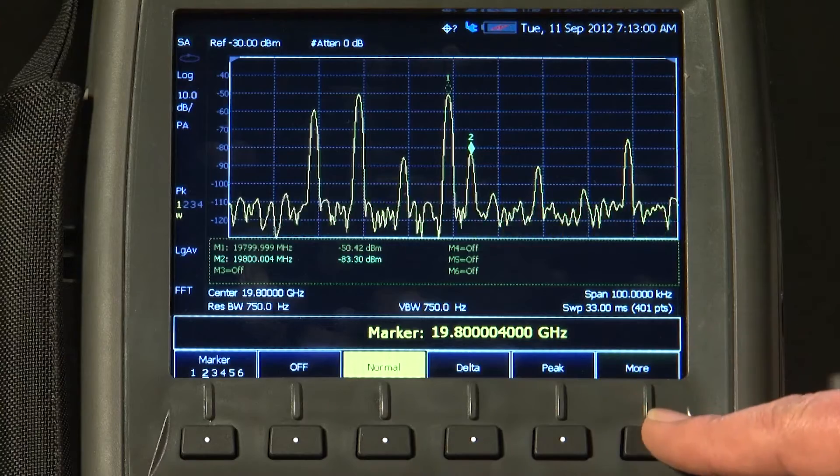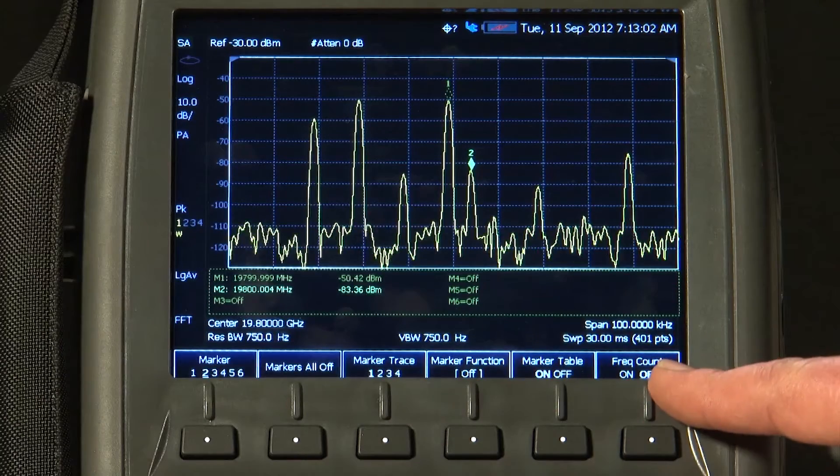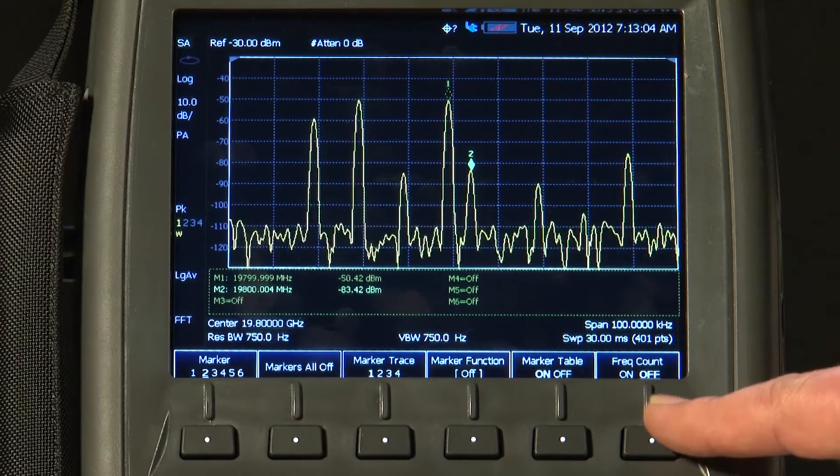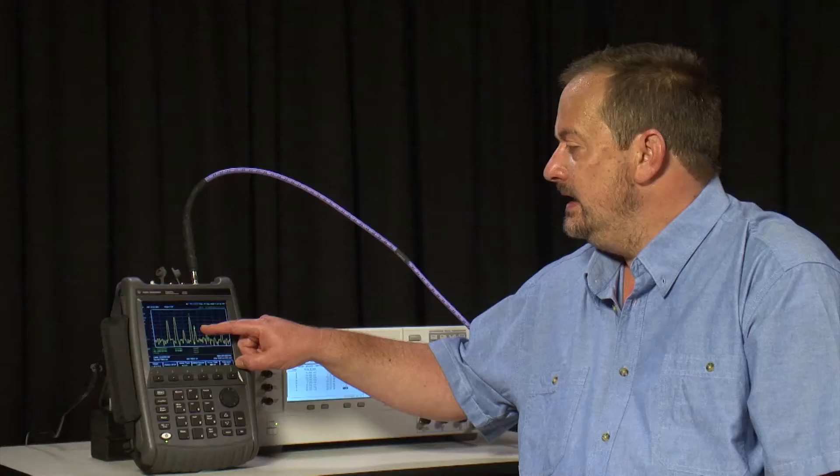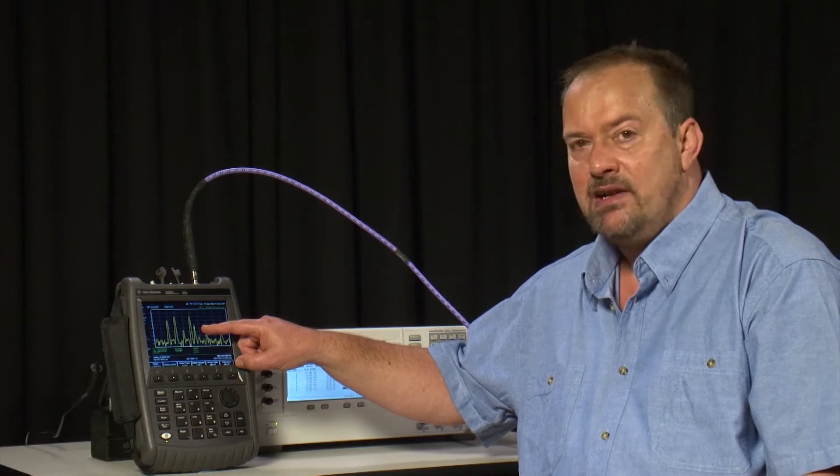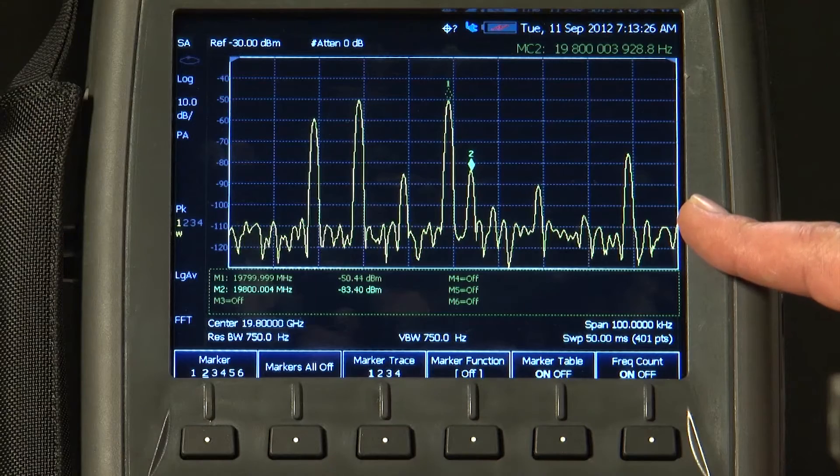If I press the marker button and then press More, you will see here on the right hand side it says Frequency Count Off. If I now turn that on, marker 2, which is the currently selected marker, has now activated a microwave frequency counter. At the end of each sweep, the spectrum analyzer pauses,